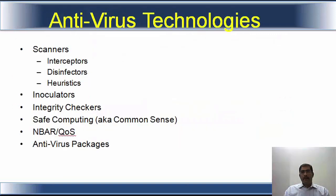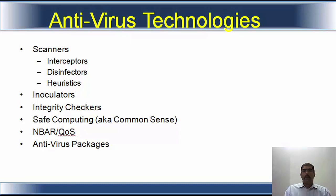Now, let us take a look at the technologies for antivirus. There are scanners; under scanners you have interceptors, disinfectors, heuristic scanners, inoculators, integrity checkers or file integrity checkers, safe computing or practice common sense, NBAR or quality of service, and antivirus packages. NBAR is network-based application recognition. An example of detection is the Nimda virus, which was detected using the NBAR or QoS method.